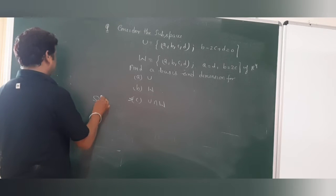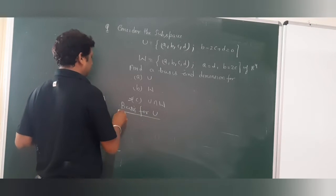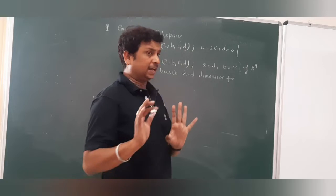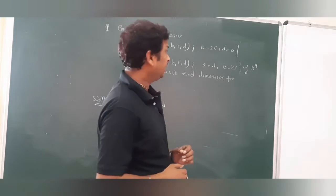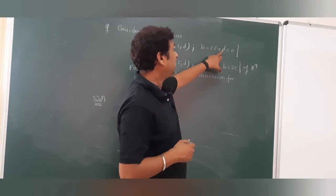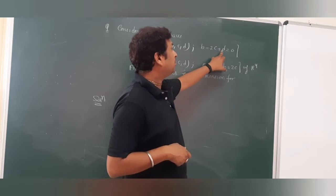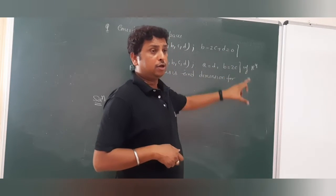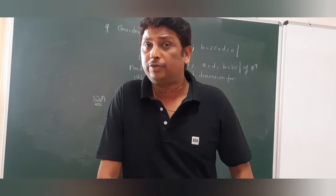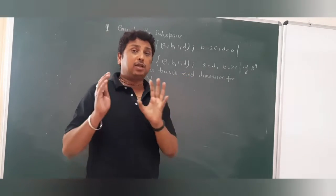Now I will explain basis for U. For U, the condition given involves b, c, and d. There are 4 vectors in R⁴, but since a has no condition on it, a is independent — so one vector is fixed. Now b can be written in terms of c and d, or c in terms of b and d. So among b, c, d: two are independent and one is dependent on the others.